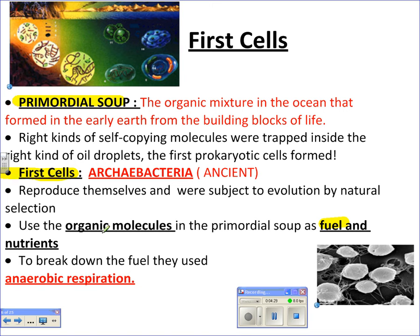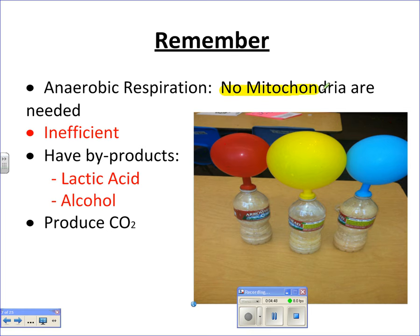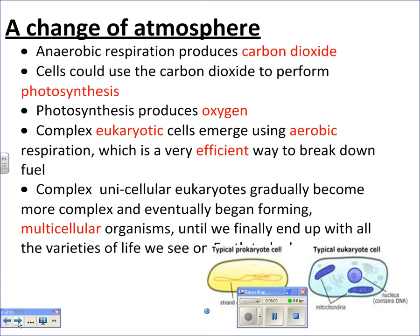So these bacteria were there, using the organic molecules — but remember, there's no oxygen at all. So if there's no oxygen, how are they going to make their ATP? They have to do it through anaerobic respiration. Anaerobic respiration requires no oxygen and no mitochondria. It's inefficient, producing only two ATP, so organisms have very little energy, which is why they were fairly small. There are also nasty byproducts — lactic acid and alcohol.